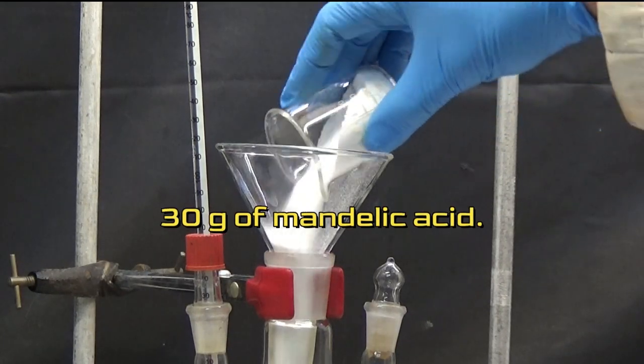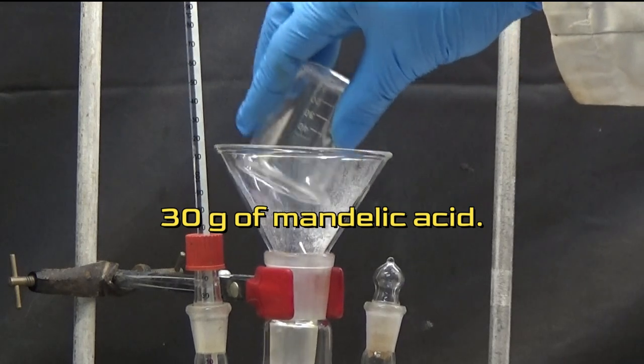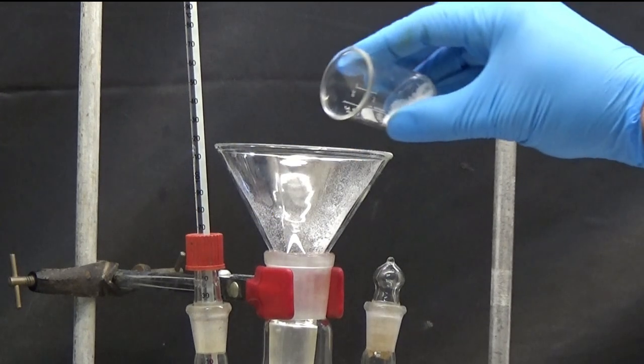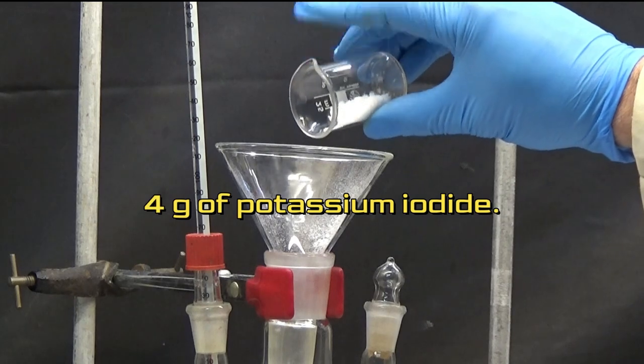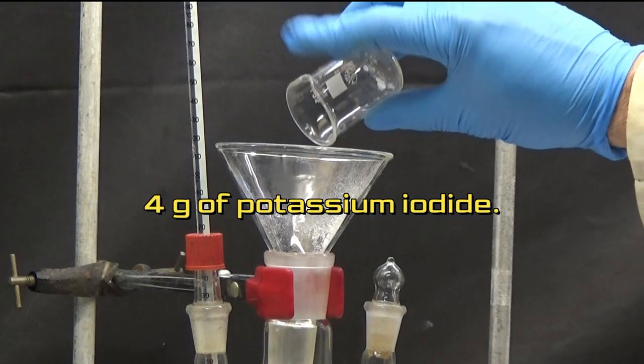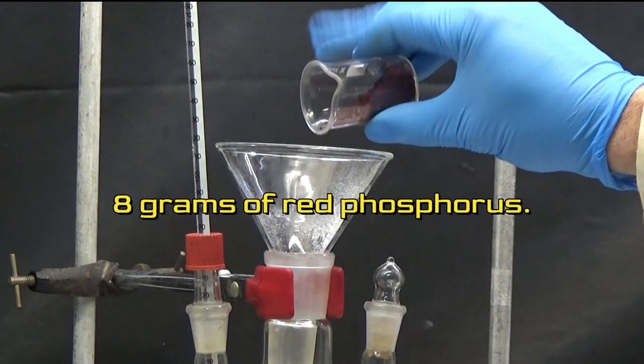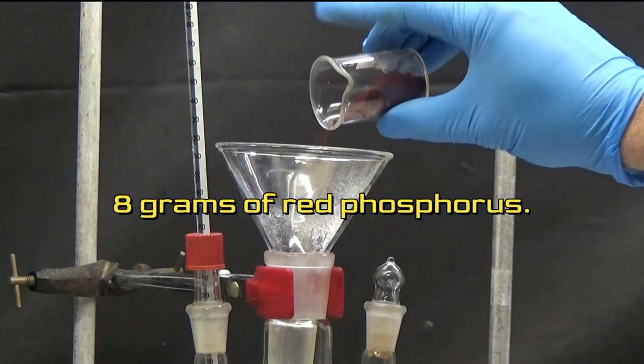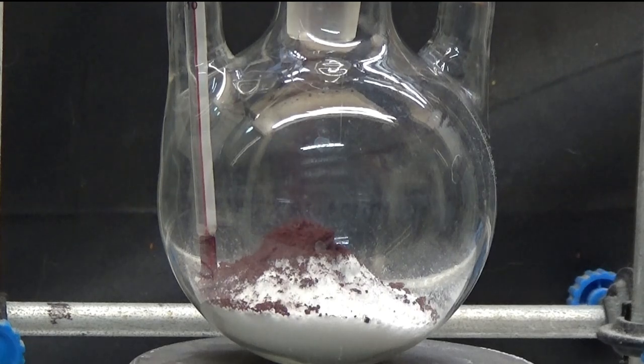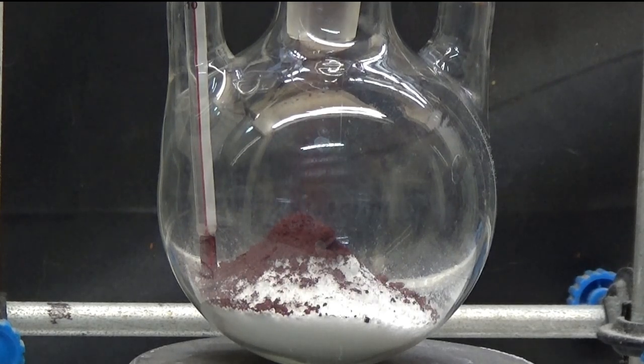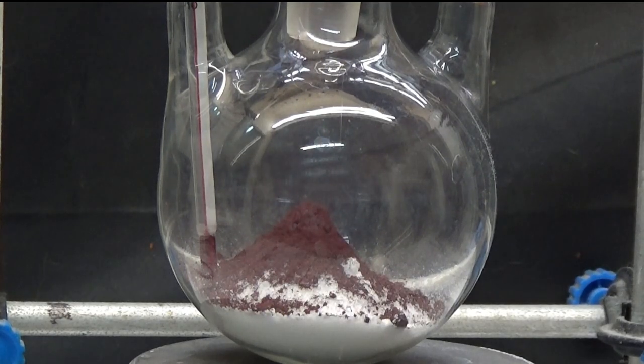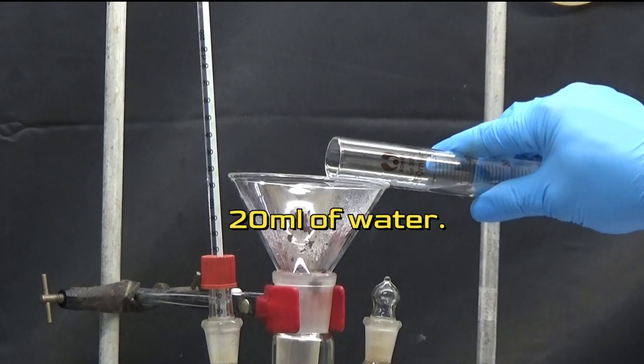30 grams of mandelic acid. 4 grams of potassium iodide. 8 grams of red phosphorus. 20 milliliters of water.